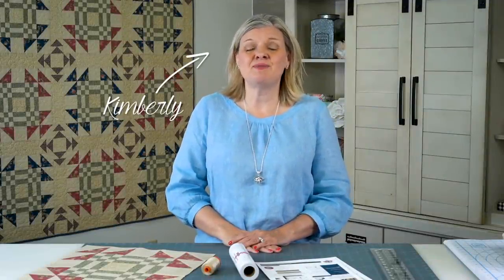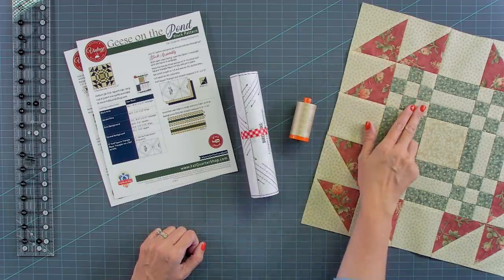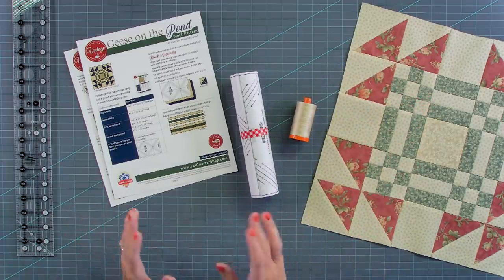Hey guys, I'm Kimberly from Fat Quarter Shop and on today's Classic and Vintage we're going to be working on a block that I've been wanting to bring to this channel for a really long time. The reason I want to bring it is it uses a combination of half square triangles and nine patches and it's very easy to do.